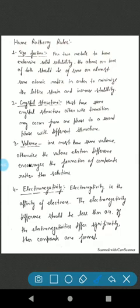So there is possibility to form a compound instead of alloy. Next is electronegativity. Electronegativity is the affinity of electrons. The electronegativity difference should be less than 0.4. If the electronegativity differs significantly then compounds are formed. These are the rules which must be followed to form an alloy.